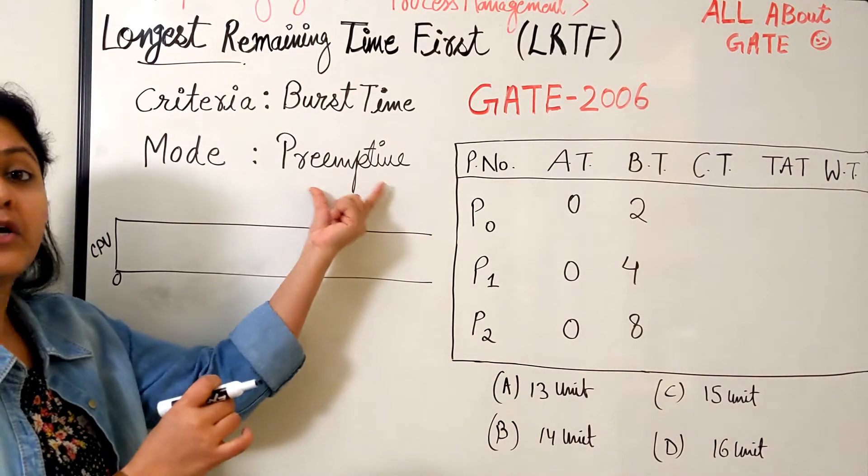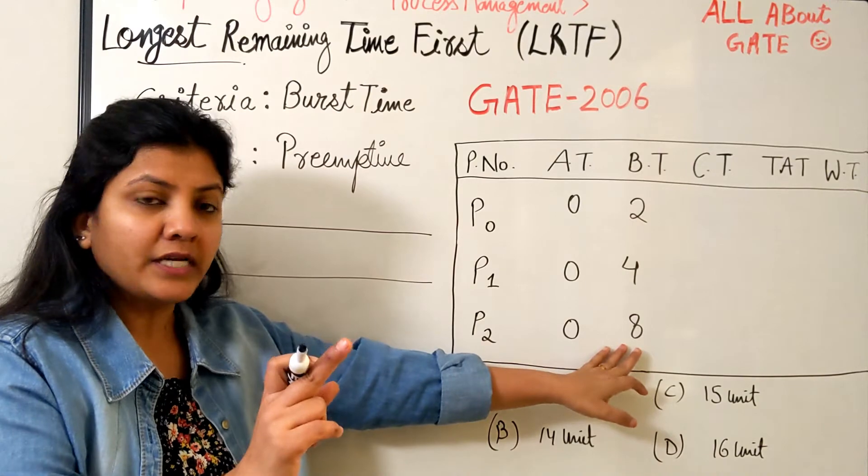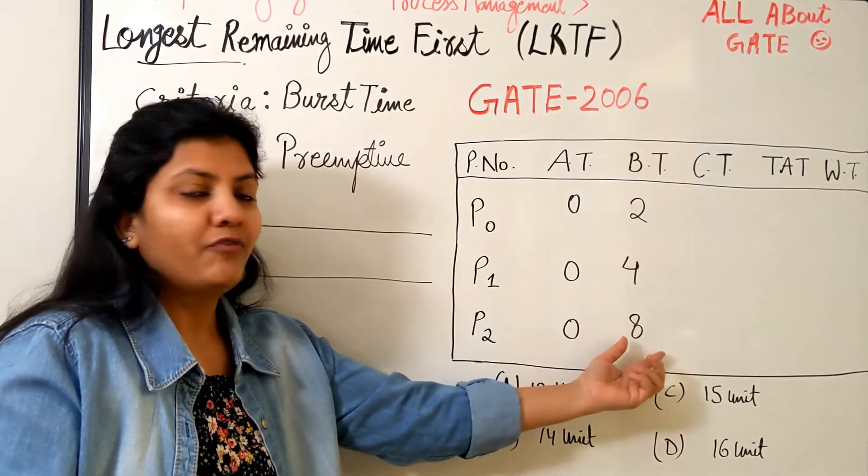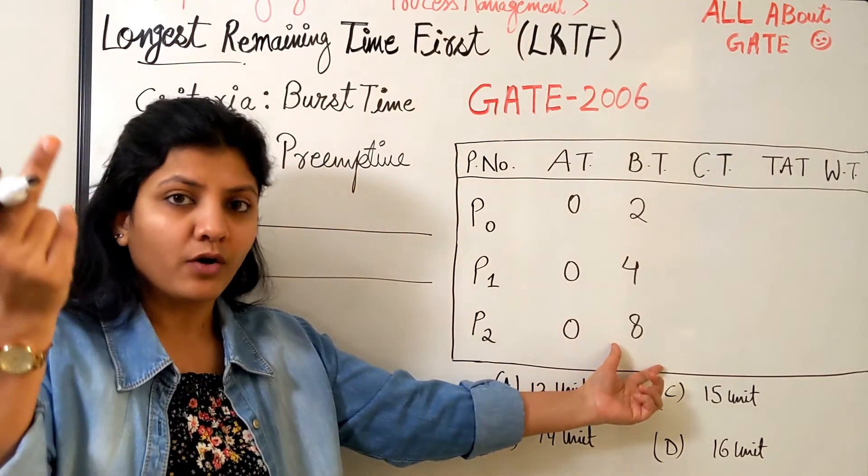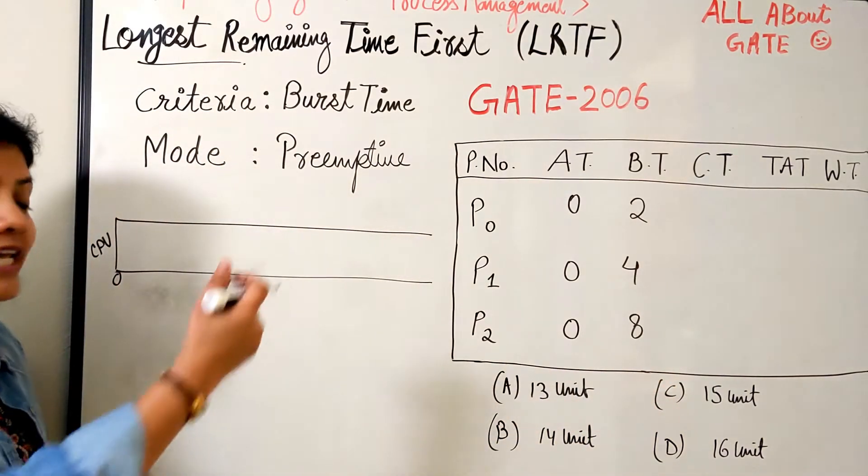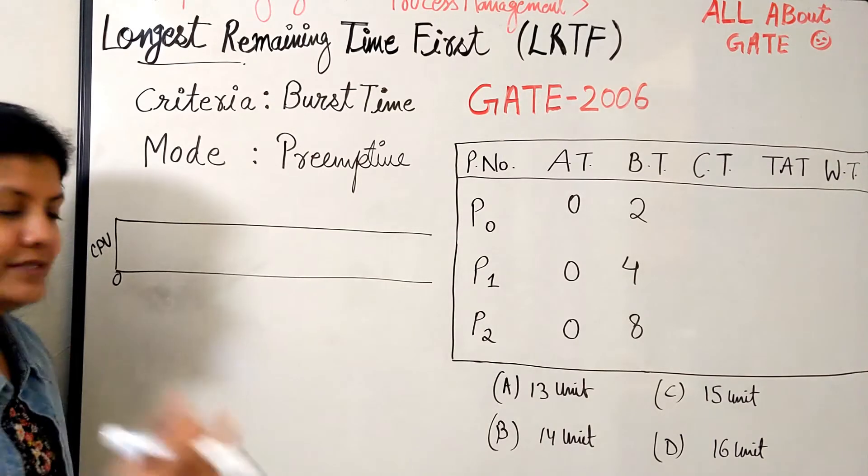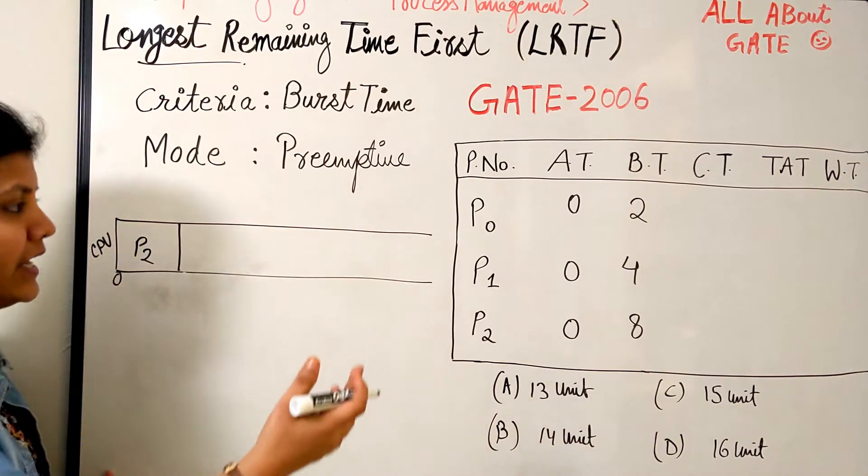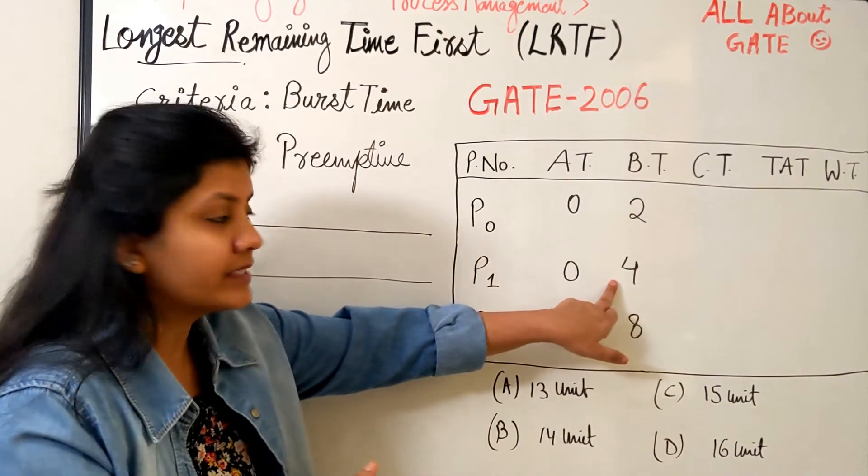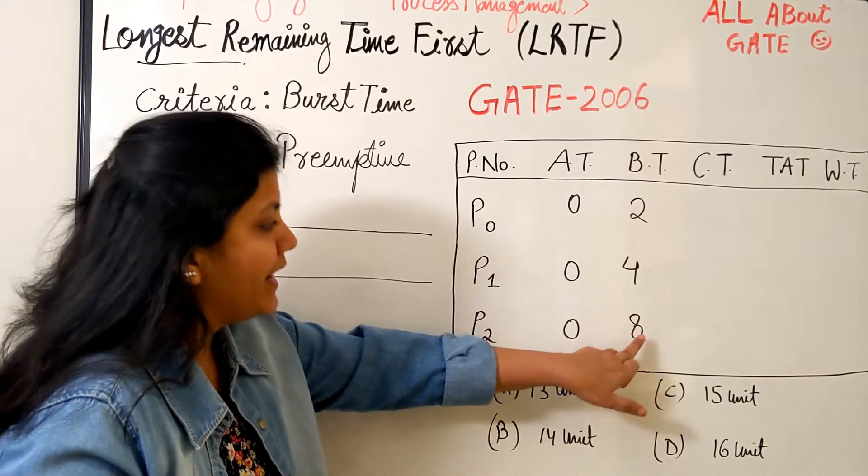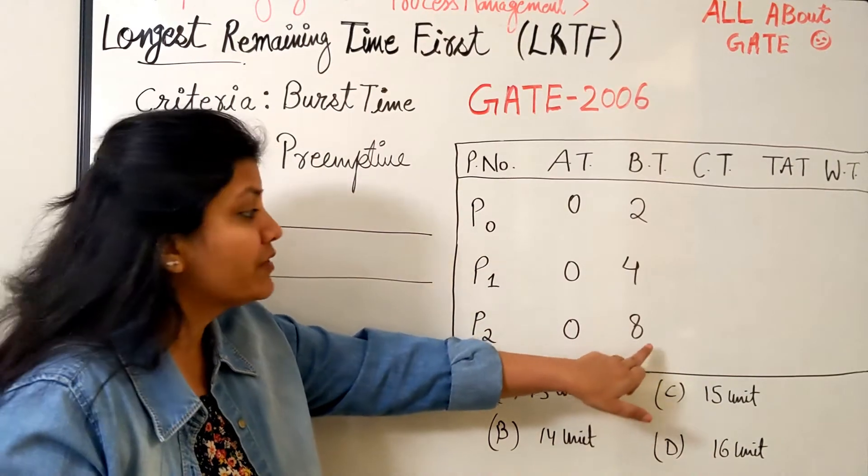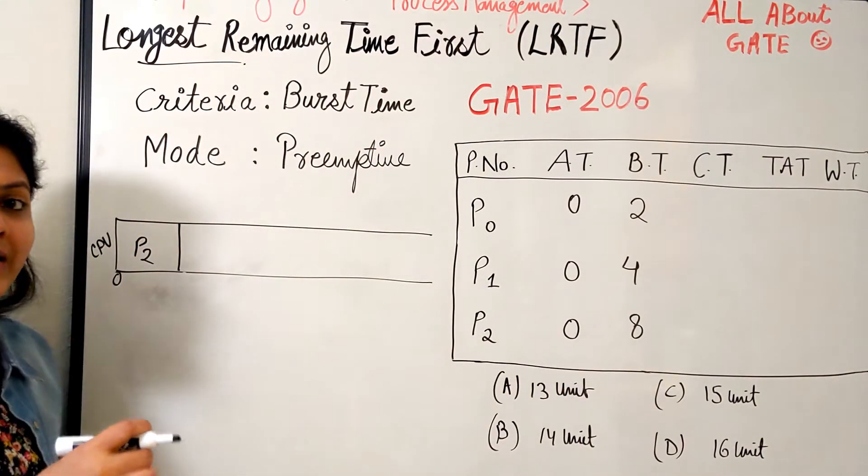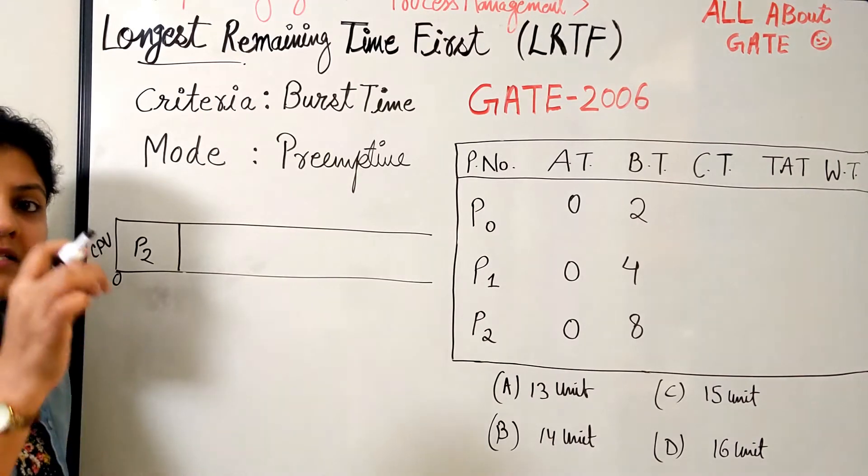Remember this is preemptive. Process P2 is right now the longer one at 8 units. I also know the other process which is smaller is 4. This is longer till it is 8, 7, 6, 5, but once its requirement becomes 4, it is going to be the same as process P1. The question is clearly mentioning that if you have a tie, you have to break the tie by the lower process ID. I should do it till time 4.